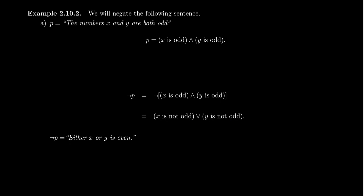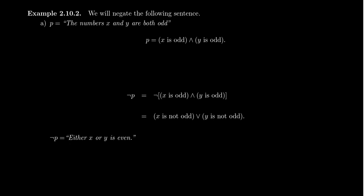Notice that with the original statement we are asserting that both X and Y are odd. But when you negate it, only one of X and Y has to be not-odd — though they could both be not-odd, since that's a possibility with an 'or.' If you say 'X and Y are both odd' is false because X is even, even if Y was odd that makes the statement false. This is essentially why you change from an 'and' to an 'or.'